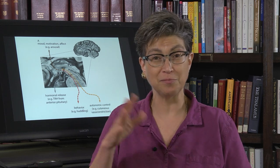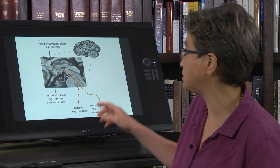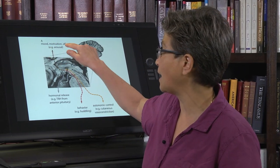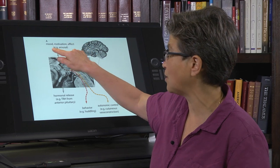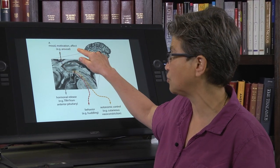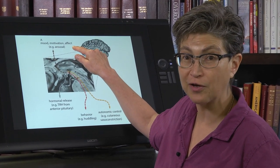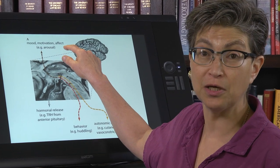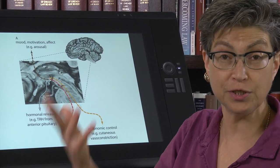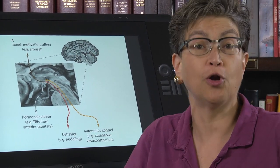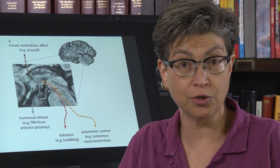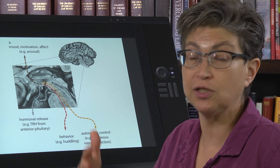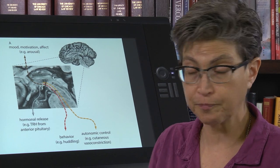On top of those instincts, we have some additional ones. Not only do we access our telencephalon to change our mood, motivation, or affect, but we can also make logical choices, such as putting on a coat in winter and wearing a sleeveless shirt in summer.